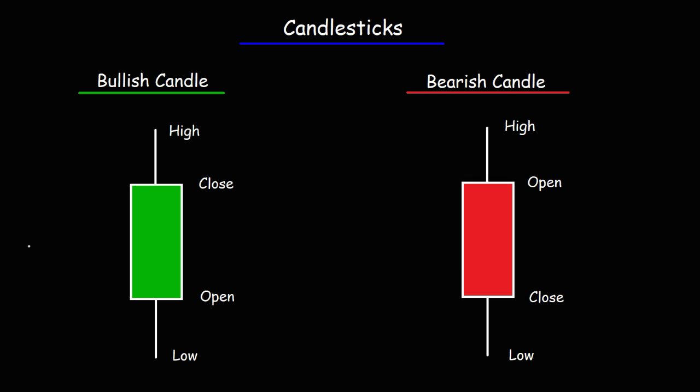When you see a bullish candle, it tells you that the price of the stock went up. A candle can represent a different time frame — it could represent a one-day time frame, a one-hour time frame, a 15-minute time frame. It varies. But for this video, we're going to focus on candles that represent a one-day time frame. Whenever you see a red candle, it indicates that the price of the stock went down for that day.